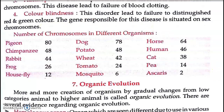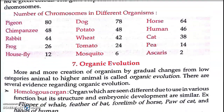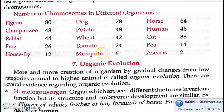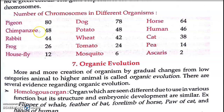Now, the number of chromosomes in different organisms. Different species have different chromosome numbers. For example: Phygeum has 80, dogs have 78, horses have 64, chimpanzees have 48 — chimpanzees being our closest ancestors in evolution. Humans have 46, potatoes have 48, rabbits have 44, wheat has 42, cats have 38, frogs have 26, tomatoes have 24, onions have 14, and mosquitoes have 6, while Ascaris has only 2 chromosomes.